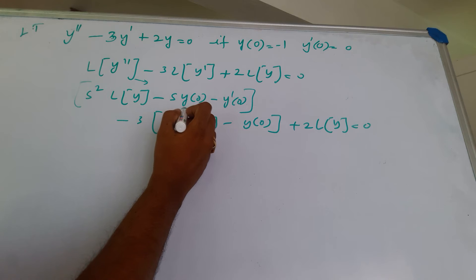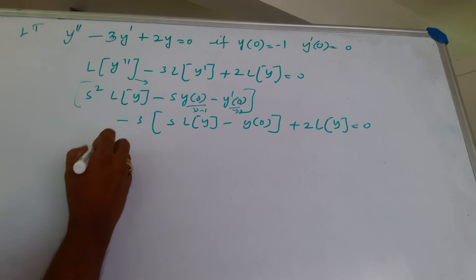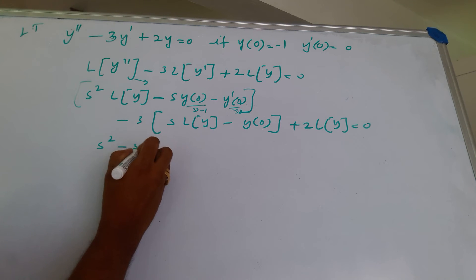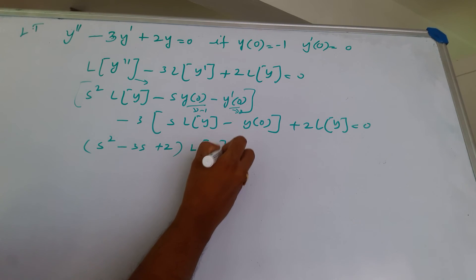When you substitute this, y of 0 being minus 1 and y dash of 0 being 0, s squared minus 3 s plus 2 into L of y.